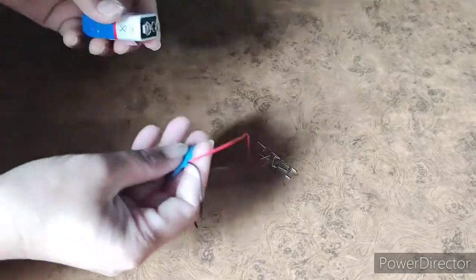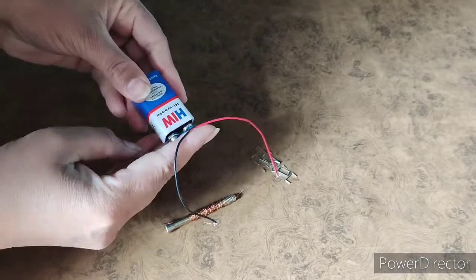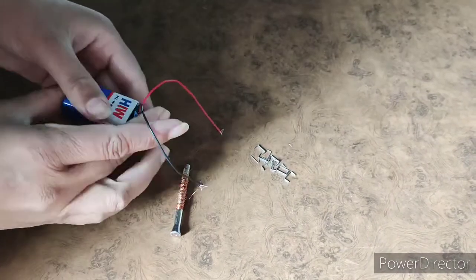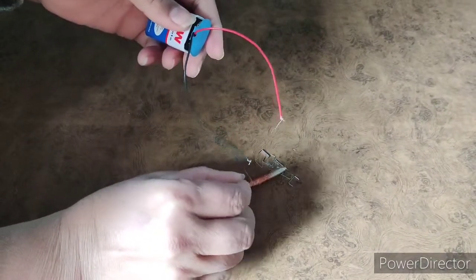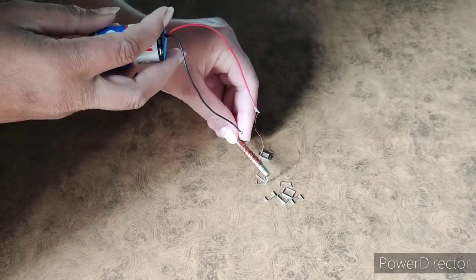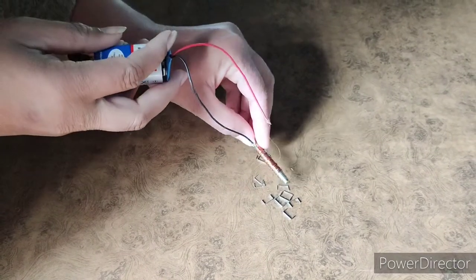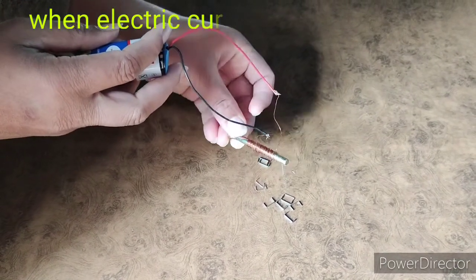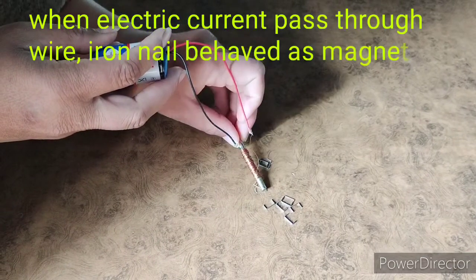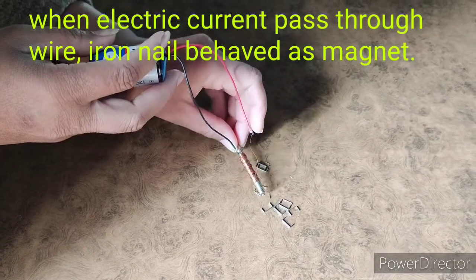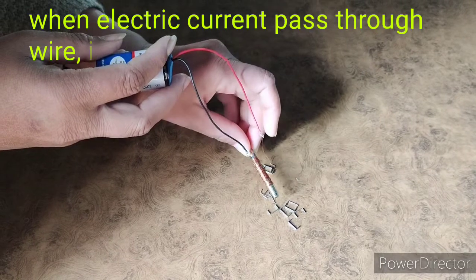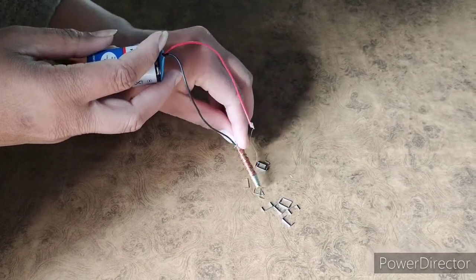Take some pins and join the battery cap with the battery. Now bring the iron nail near the pins. You see some pins are attracted toward the iron nail. When electric current flows through the wire, the iron nail behaves like a magnet. This is known as an electromagnet.